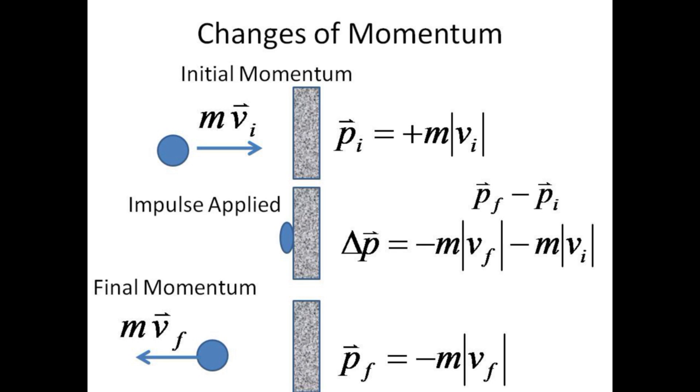The change in momentum is the final momentum minus the initial momentum. Note that both terms contribute negatively to yield a large negative change in momentum.